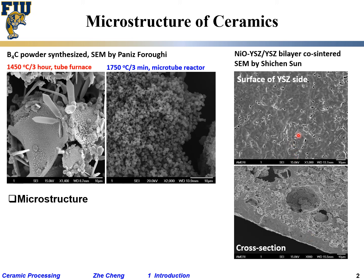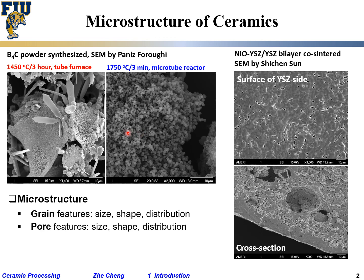Under microstructure, sometimes we are concerned with grain or crystal features: what is the size, shape, and distribution. This crystal has a so-called dagger shape, while these crystals are pretty much equiaxed — the same dimension everywhere. Pore features — do you see pores? — the size, the shape, the distribution — all these are important to the material. Also uniformity, non-uniformity, and impurity phases — all these are so-called microstructure for a material.